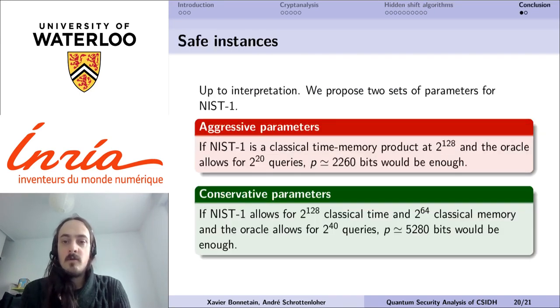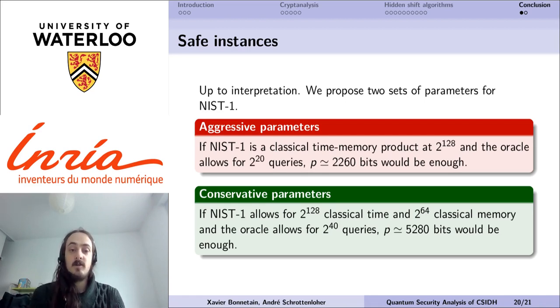Overall, we have seen multiple hybrid attacks over CSIDH, and we can ask what would be a set of parameters that is safe, and that cannot be attacked by such quantum algorithms. Unfortunately, the NIST metrics are not precise enough to provide a definitive answer to this question.